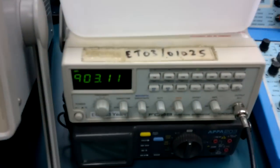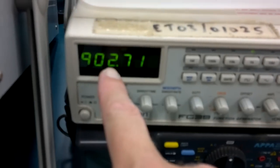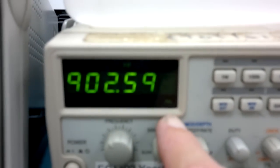So, nowadays, function generators are pretty good. You can get a nice digital readout. So, 902 cycles per second, or we call it Hertz. There's a small Hz there.